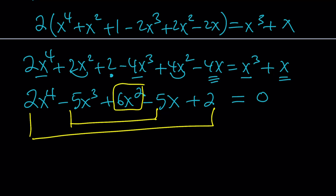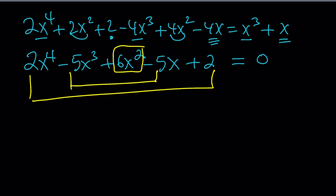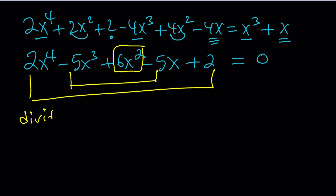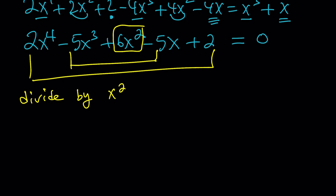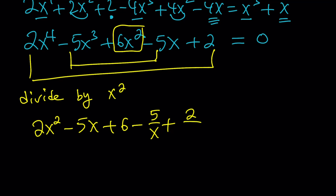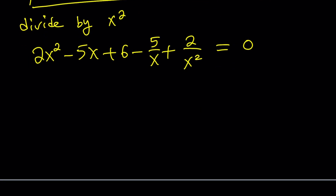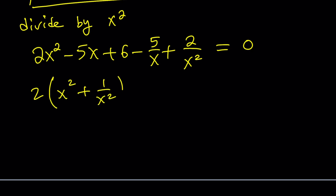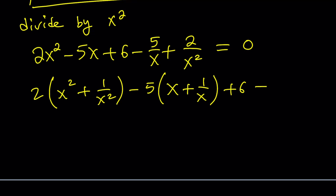These kinds of equations are special, and we can divide everything by x to the second power, which happens to be in the middle. Dividing by x squared gives us 2x squared minus 5x plus 6 minus 5 over x plus 2 over x squared equals 0. Now we can put these together and factor out a 2, writing it as 2 times x squared plus 1 over x squared minus 5 times x plus 1 over x plus 6 equals 0.